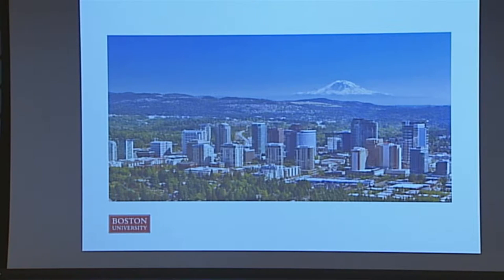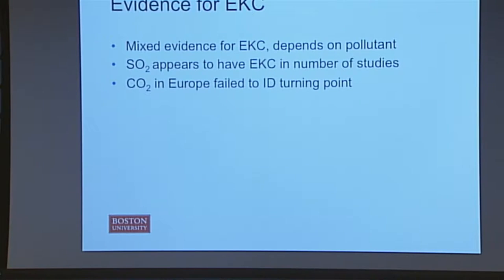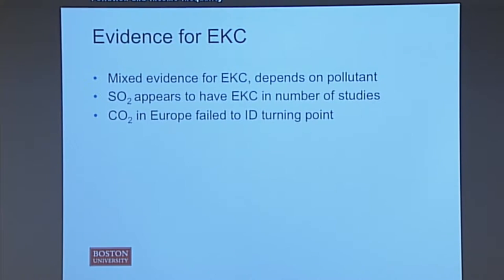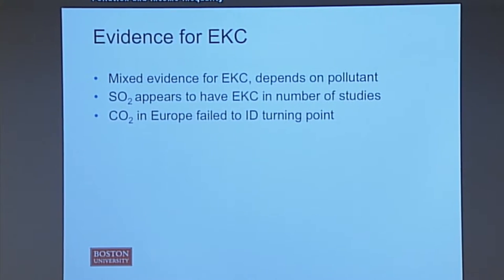You can see this qualitatively. But what have previous quantitative studies found regarding the EKC? There has been mixed evidence, and it depends on the pollutant being studied. Studies done in the 90s found that there appears to be an EKC over time with sulfur dioxide, which makes sense because there's a direct, experienceable negative impact — acid rain comes with sulfur dioxide. But studies on less obviously impactful pollutants such as CO2 have been less conclusive.